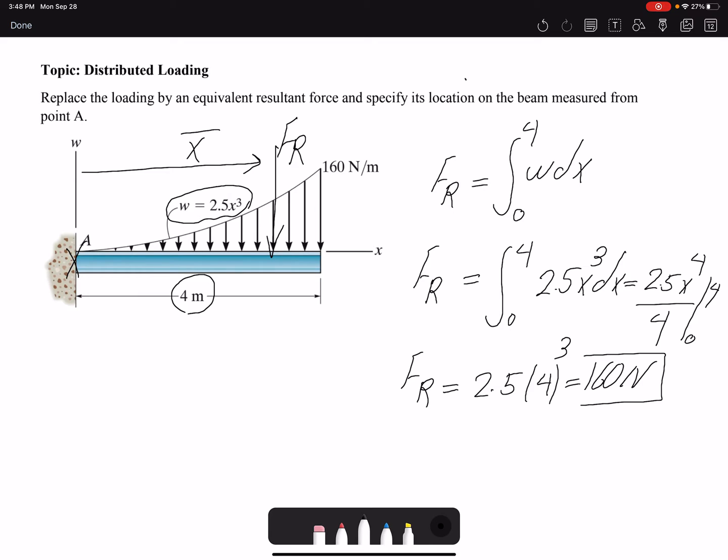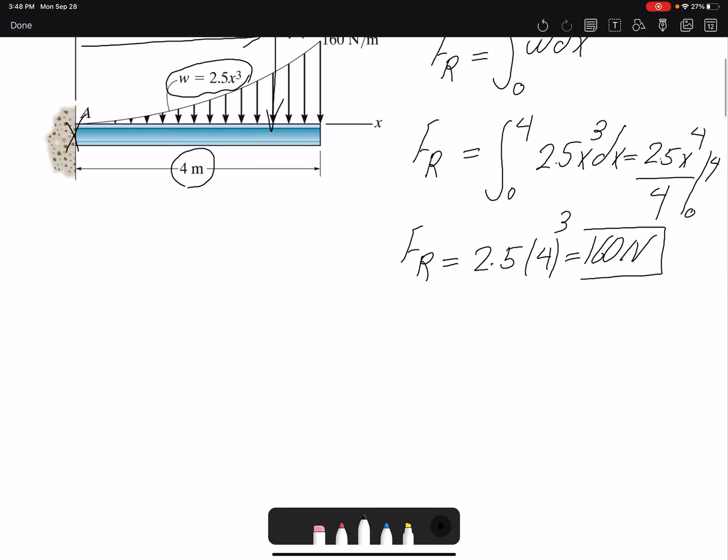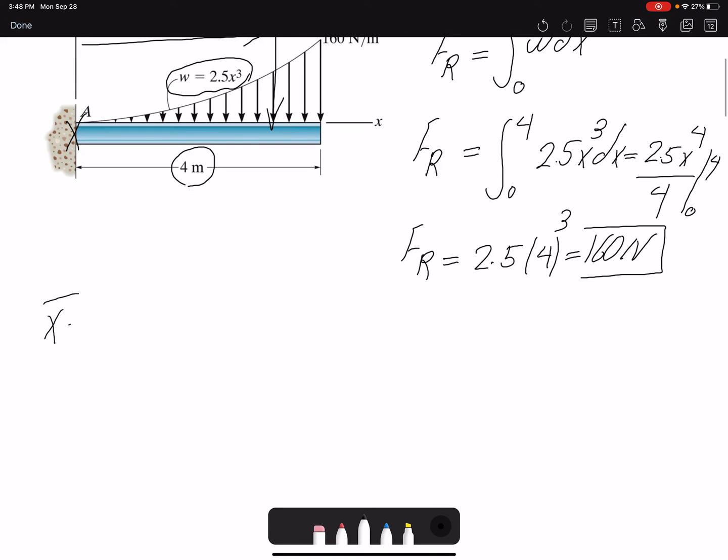X bar: the equation for x bar was the integral of w times x dx divided by the integral of w dx. This component in the denominator is simply FR that we already found, so we can just carry it over. This one is 160.